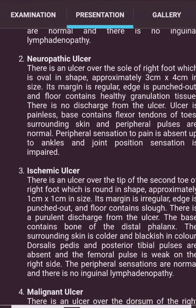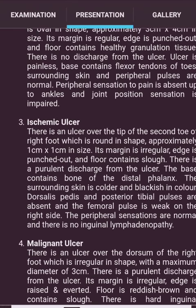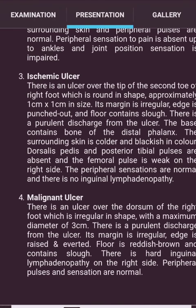Neuropathic ulcer presentation: 'There is an ulcer over the sole of the right foot, oval, approximately 3 cm by 4 cm. The margin is regular with a punched-out edge. The floor contains healthy granulation tissue. There is no discharge. The ulcer is painless; the base contains flexor tendons of the toes. Surrounding skin and peripheral pulses are normal. Peripheral sensation to pain is absent up to the ankles and joint position sensation is impaired.'